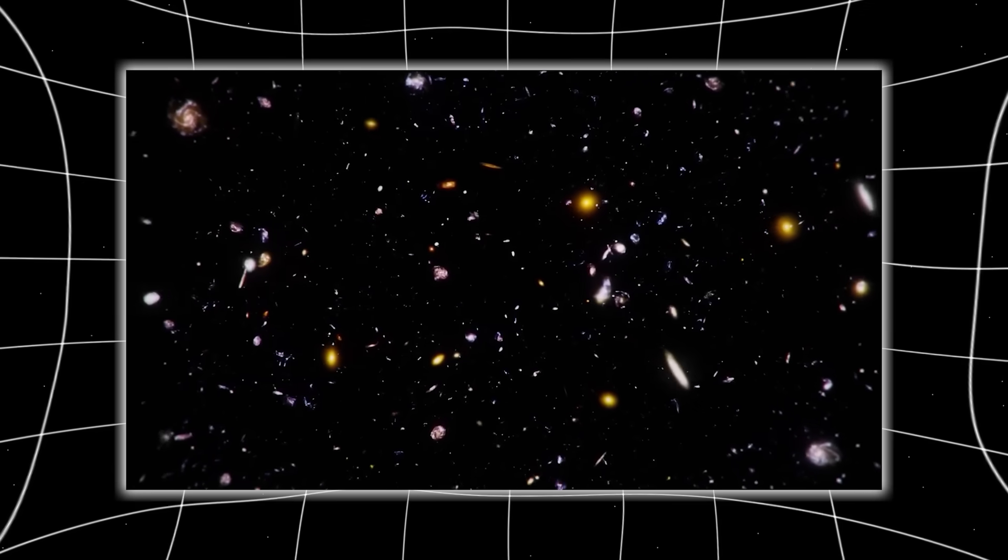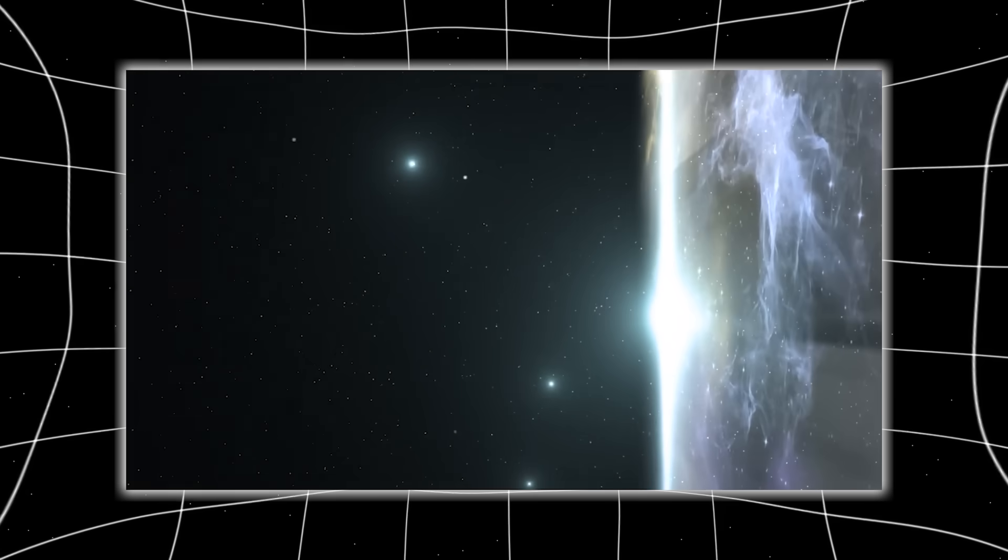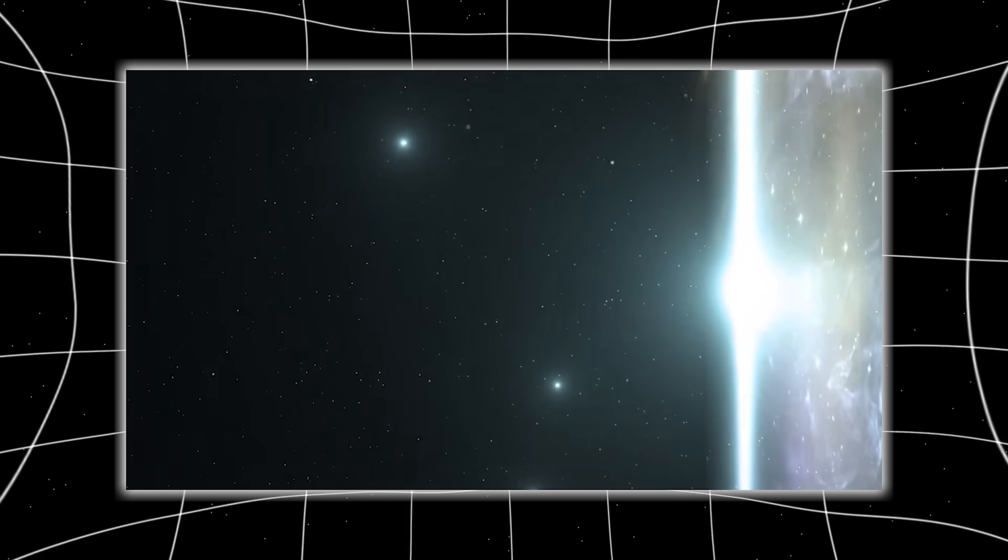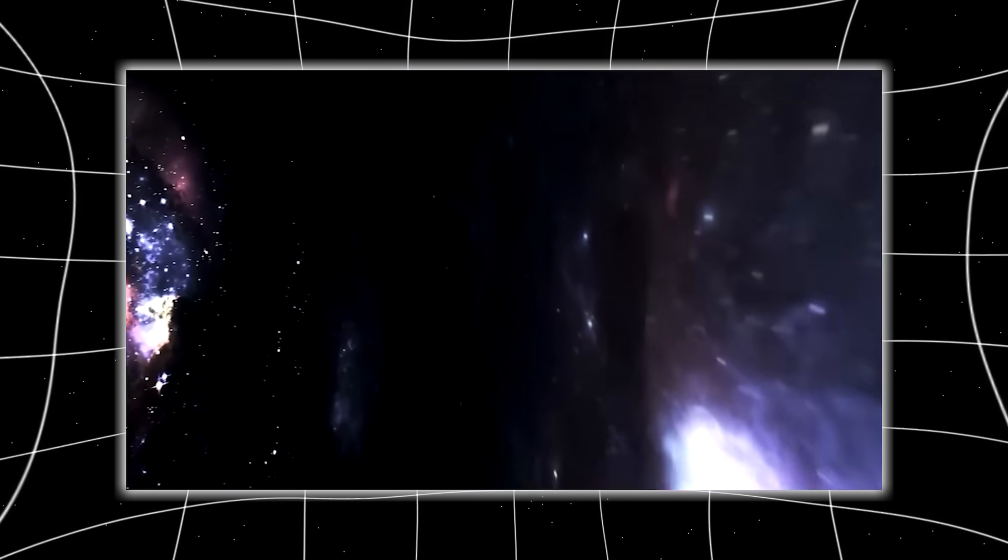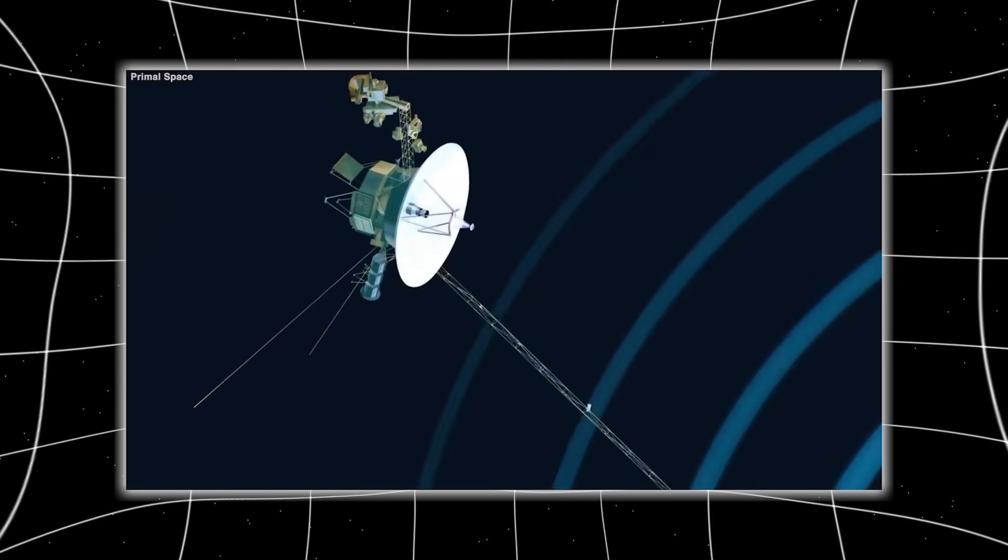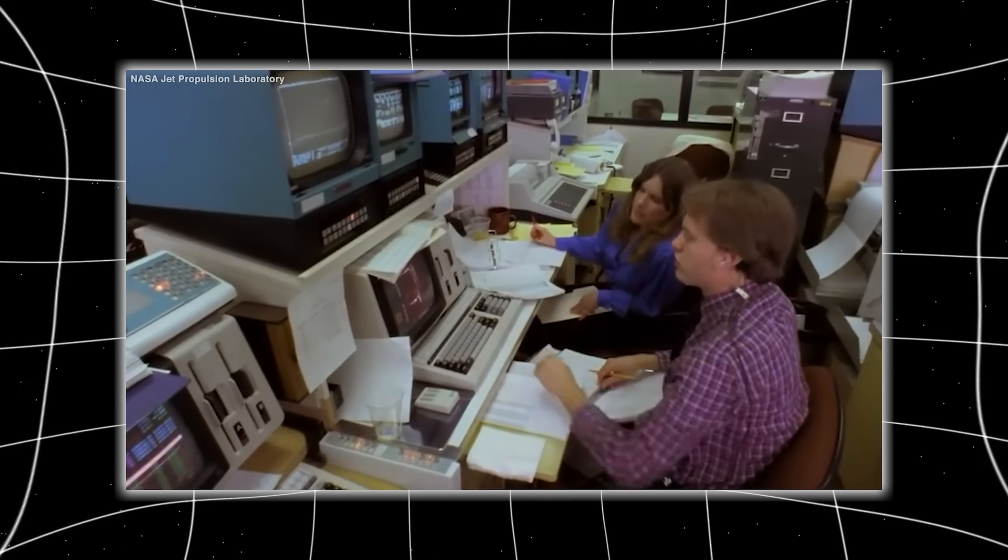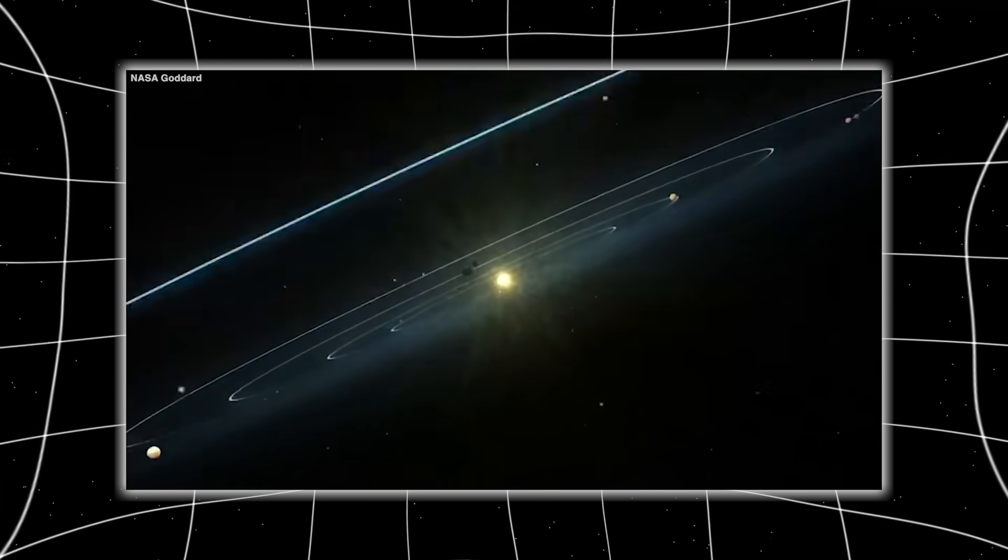For nearly five decades, Voyager 1 has been sailing through space, whispering secrets from the edge of our known universe. It was built to observe but never to act, to listen but never to speak. And yet, just weeks ago, something changed.